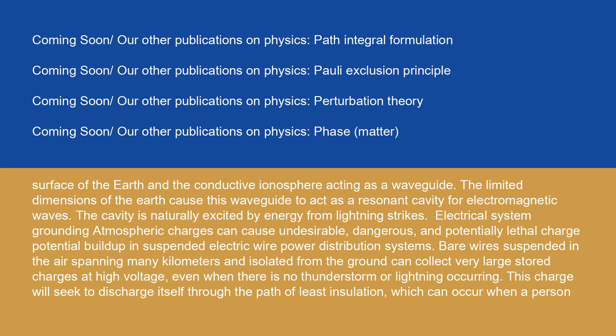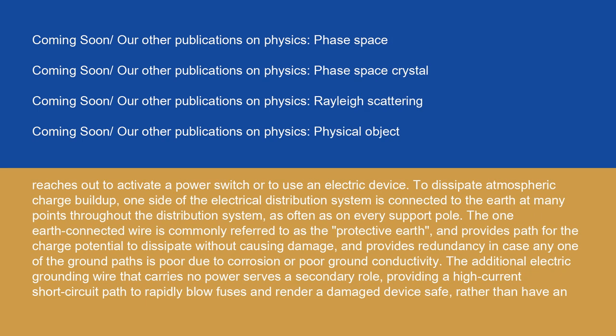Electrical system grounding: atmosphere charges can cause undesirable, dangerous, and potentially lethal charge potential buildup in suspended electric wire power distribution systems. Bare wires suspended in the air, spanning many kilometers and isolated from the ground, can collect very large stored charges at high voltage, even when there is no thunderstorm or lightning occurring. This charge will seek to discharge itself through the path of least insulation, which can occur when a person reaches out to activate a power switch or to use an electric device. To dissipate atmospheric charge buildup, one side of the electrical distribution system is connected to the Earth at many points throughout the distribution system, as often as on every support pole. The one Earth-connected wire is commonly referred to as the protective Earth, and provides a path for the charge potential to dissipate without causing damage, and provides redundancy in case any one of the ground paths is poor due to corrosion or poor ground conductivity.